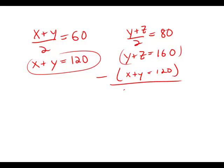Subtracting all the way across, the y's cancel, I get z minus x equals 160 minus 120 is 40. And this is answer choice B.